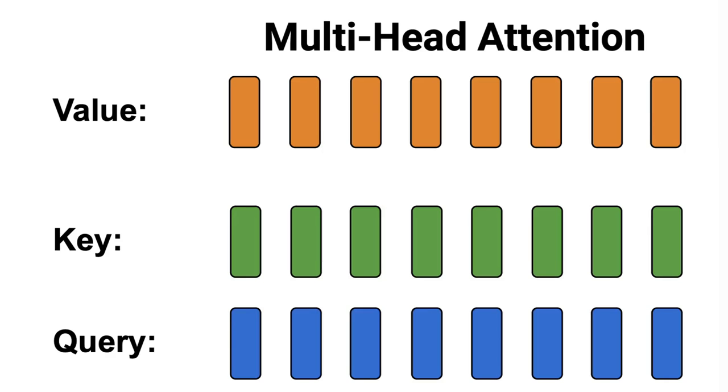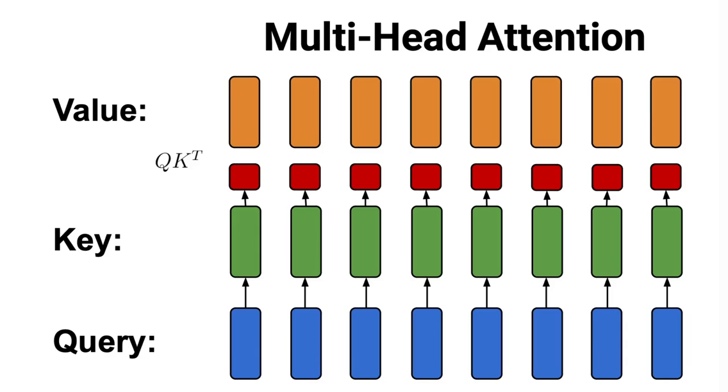Now, in each head, we calculate the dot product between the query matrices Q and the key K matrices, the QK transpose. Then, we rescale the results by dividing with the square root of d_k, the dimension of the keys and queries embeddings, apply the softmax function, and multiply the results by the value matrix V. This is performed on each head so we get h outputs that are concatenated to produce the final output.